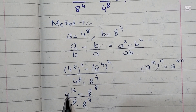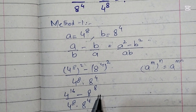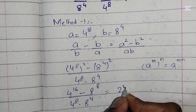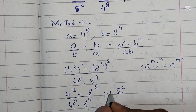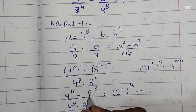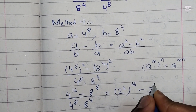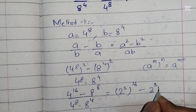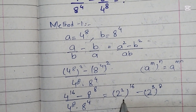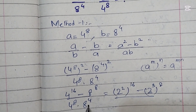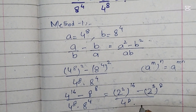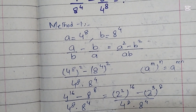Now we will break 4 and 8 into powers of 2. We can write 4 as 2 squared, so the first term becomes 2 squared whole power 16. We write 8 as 2 power 3, so the second term becomes 2 power 3 whole power 8. The denominator remains 4 power 8 times 8 power 4.